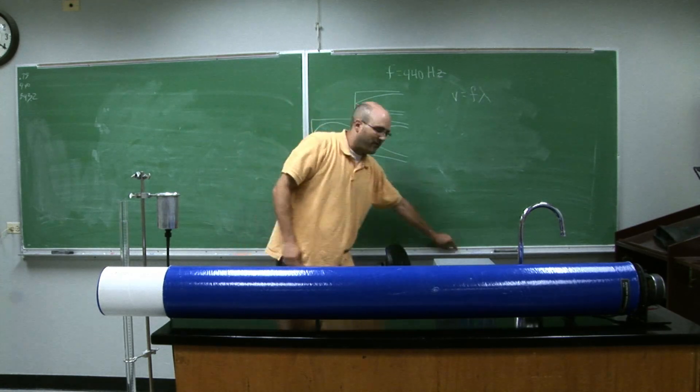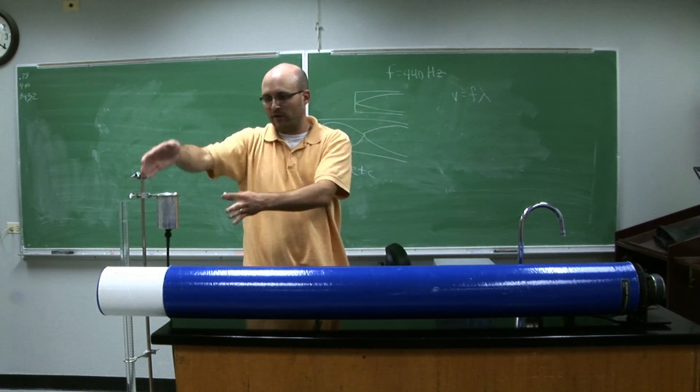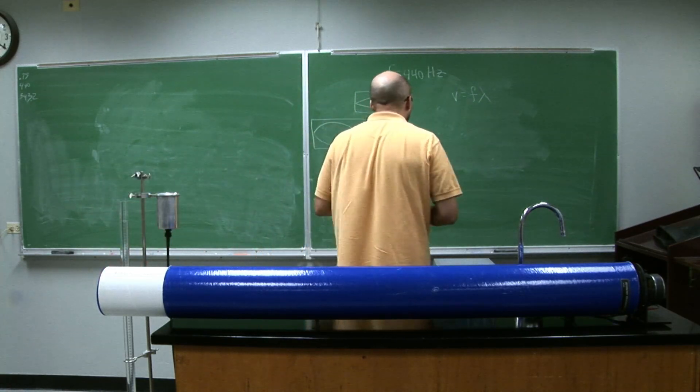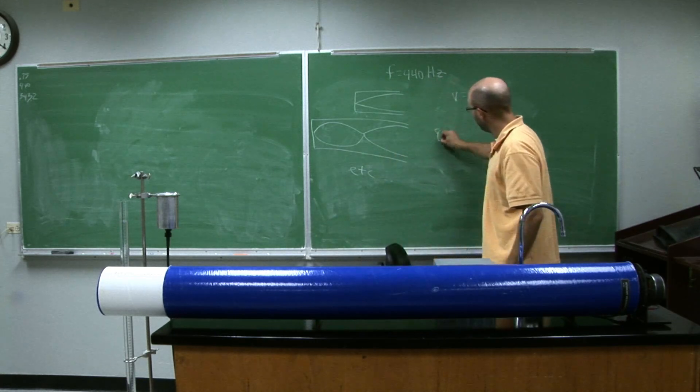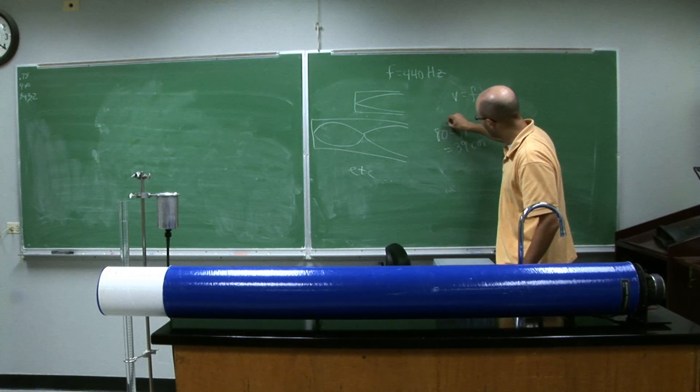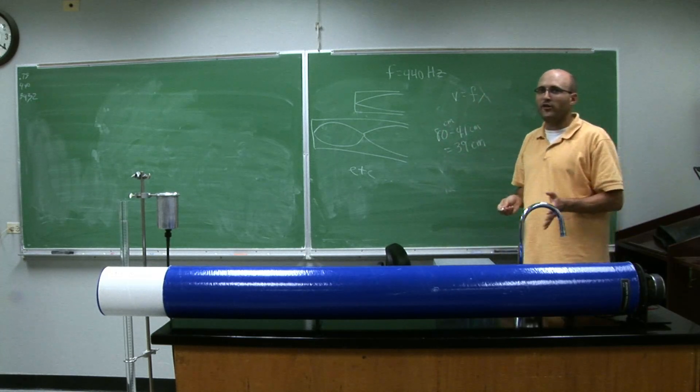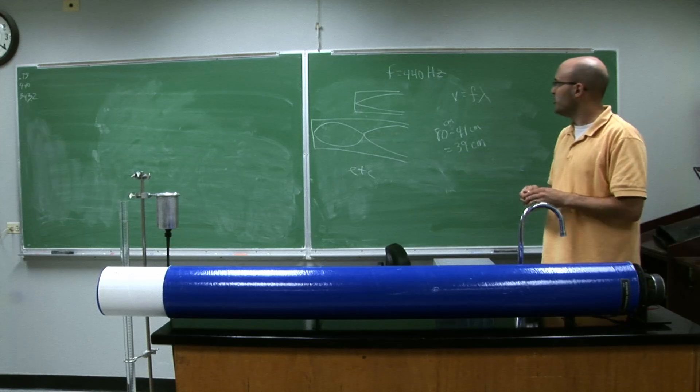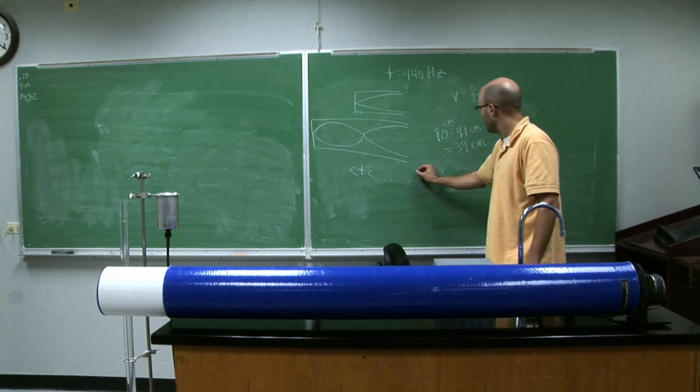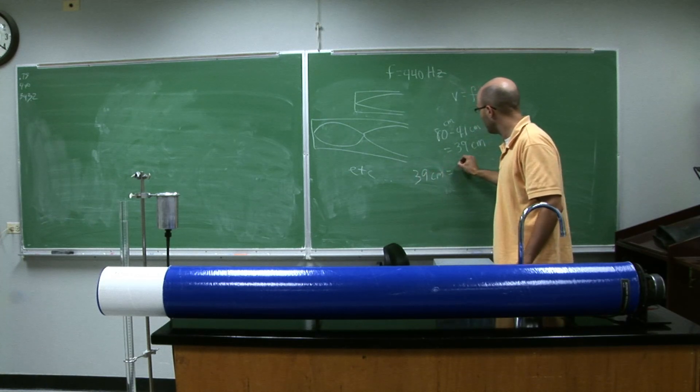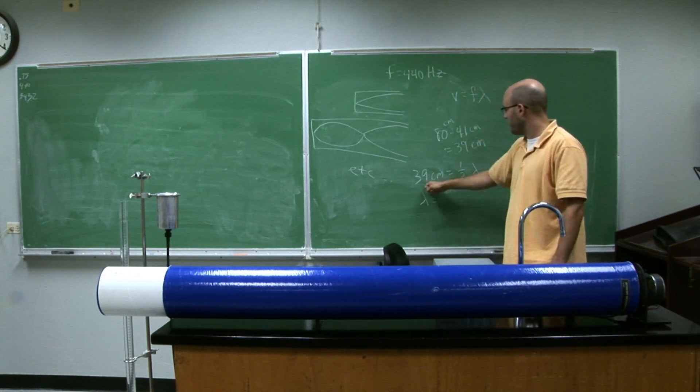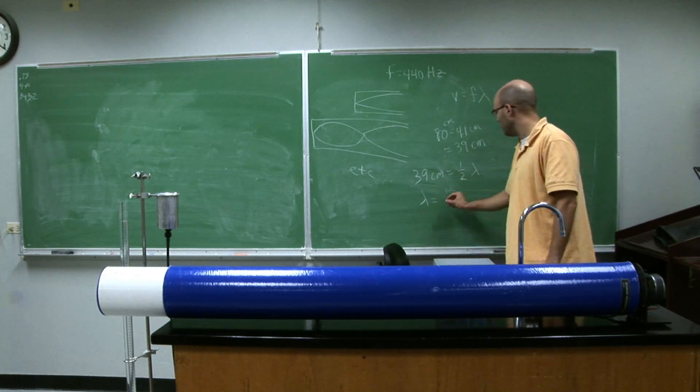So I stretched out this tube from 41 centimeters exposed to 80 centimeters exposed. There's 39 centimeters of difference in the two positions. That means that one half of one wavelength is half a wavelength. So the wavelength has doubled this. 39 doubled is 78.